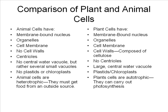Now let's discuss the similarities and differences between plant and animal cells. Both types of cells are eukaryotic, meaning they both have membrane-bound nuclei and membrane-bound organelles such as mitochondria and endoplasmic reticulum. Both types also have similar cell membranes. The most obvious difference is that plant cells have a cell wall outside the cell membrane, which animal cells lack. Plant cells also have a large central vacuole which helps to store water, minerals, and other things; animal cells have vacuoles but they are not nearly as large.